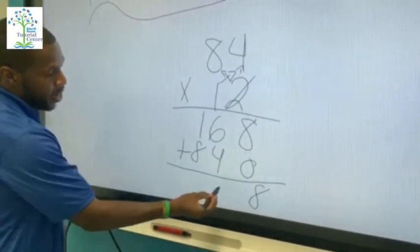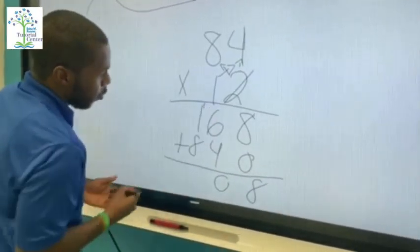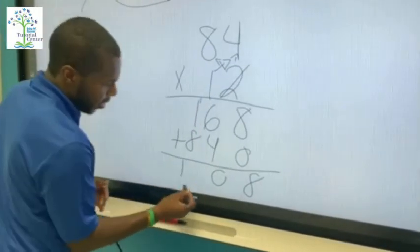Six plus four is ten. Zero there, carry my one. Eight plus one is nine. Nine plus one is ten.